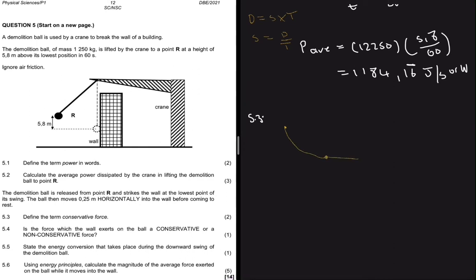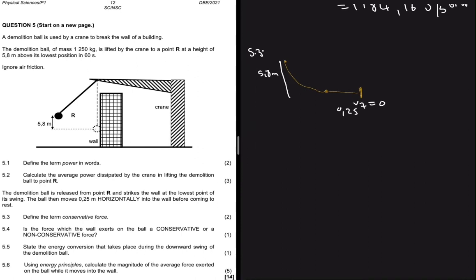So we have here, it's there, all right. And then this horizontal movement that's 0.25 meters and then this height here is 5.8 meters like we already know. Okay, now the question for 5.3 says define the term conservative force.